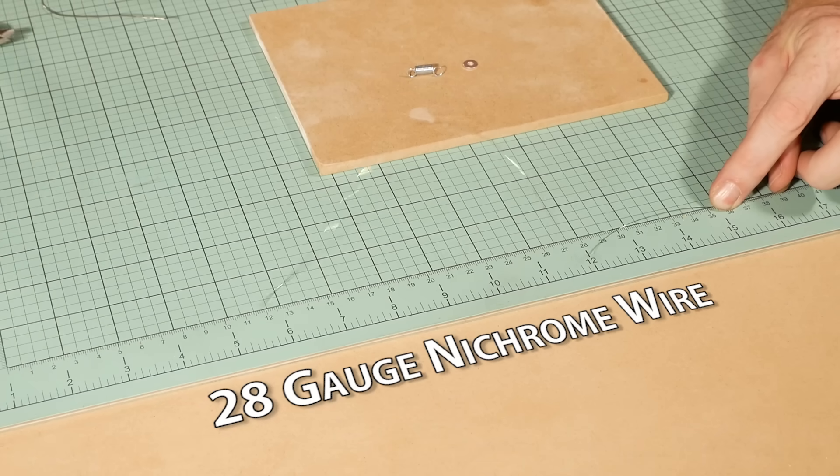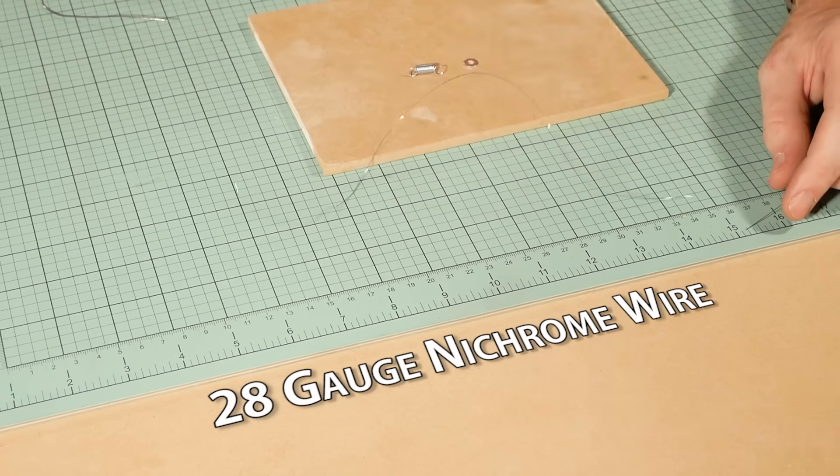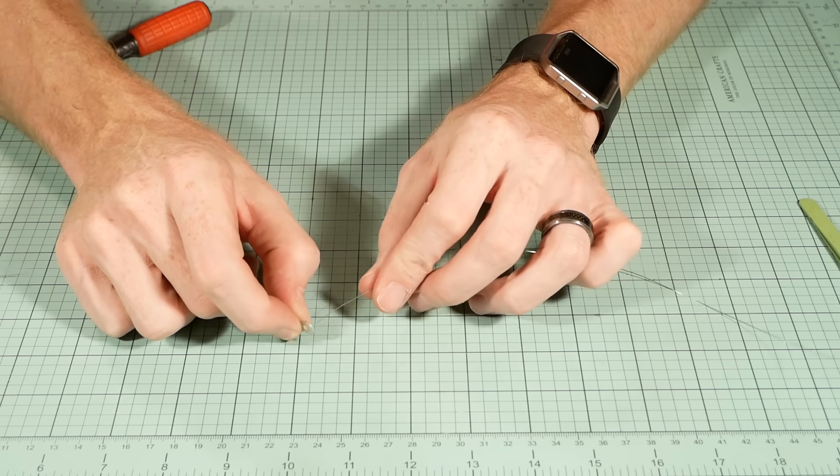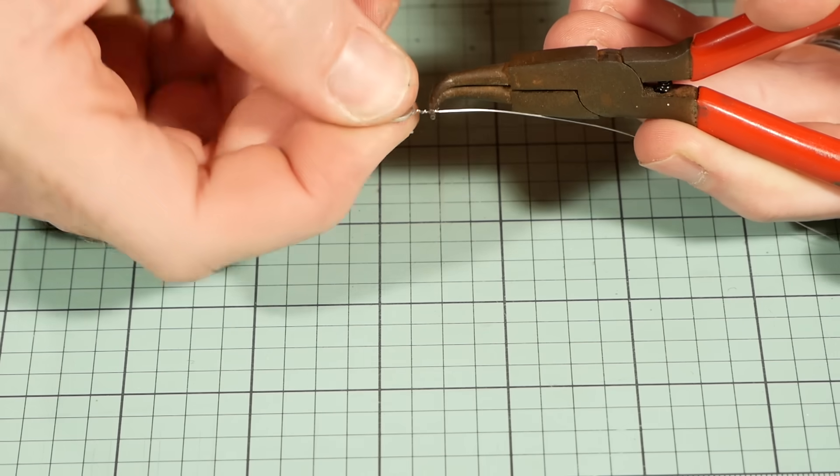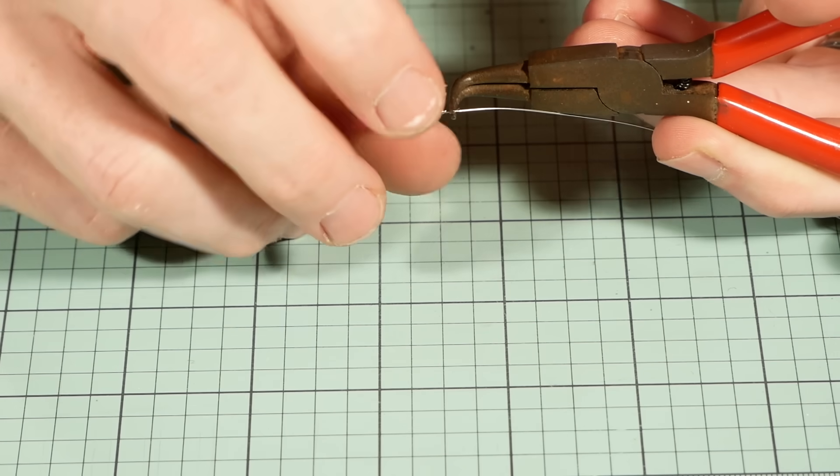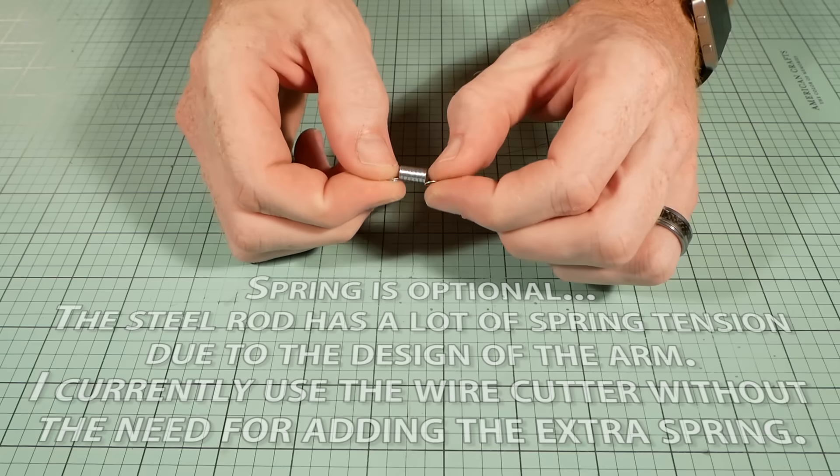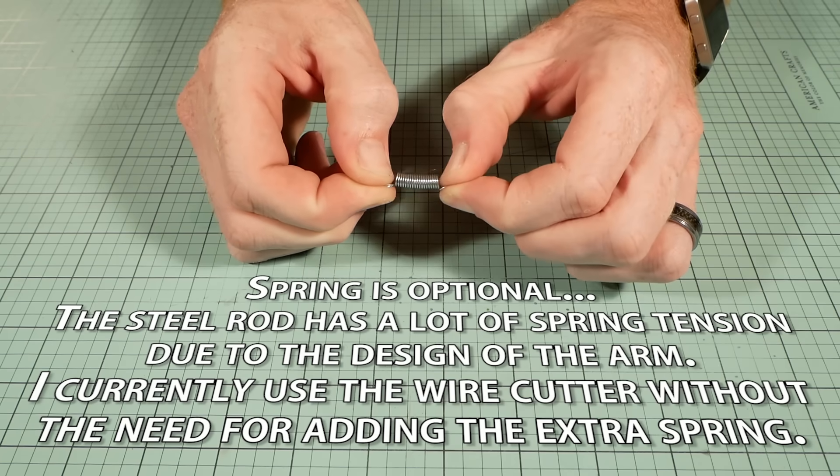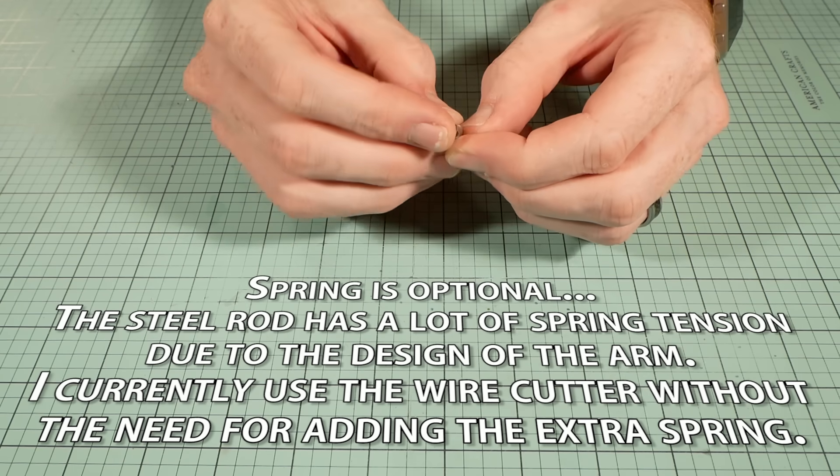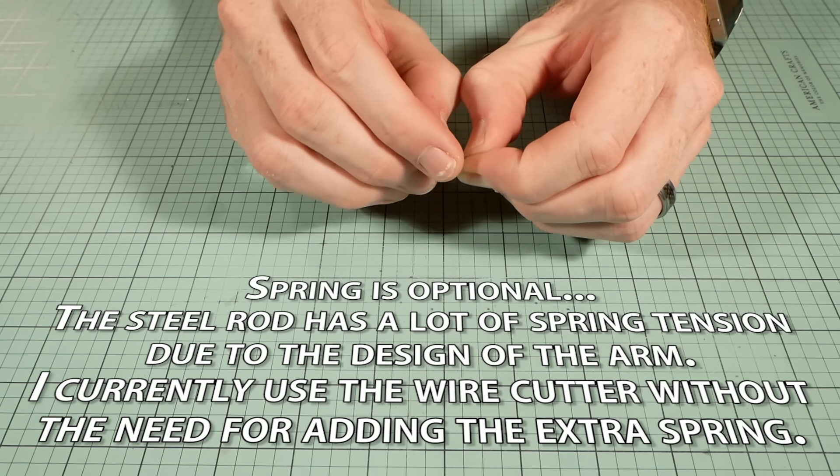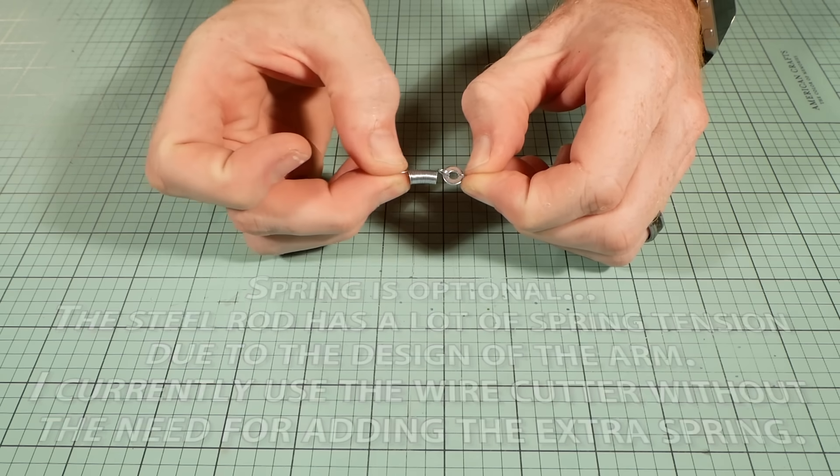The wire is 28 gauge nichrome wire. To make it easy to connect I first cut it to size and then I loop it through a small washer and twist it so it's secure and won't pull off. Finally add a small spring to the washer as well. As the wire heats up and cools down it will expand and contract and we want the spring to take up the excess slack as the wire heats up. That way we will be able to get nice straight cuts in the foam.